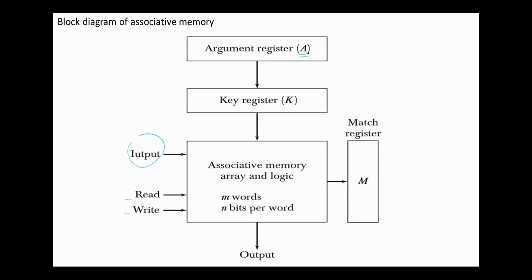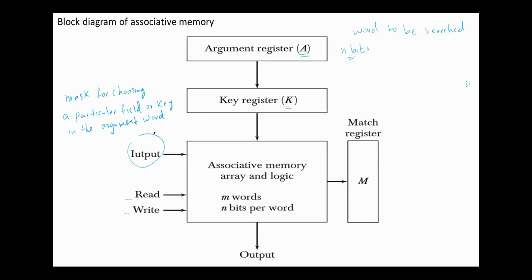The argument register A contains the word to be searched. It has n bits, one for each bit of the word. The key register K, also of the same size, provides a mask for choosing a particular field or key in the argument word.